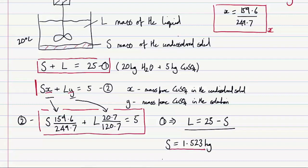The key takeaways from this problem are: we set up the problem using a diagram and interpreted the information in the question; we labeled our unknowns; we wrote the appropriate number of equations to solve for those unknowns; and we introduced the idea of a mass fraction, using that definition and the data given in the question to set up two simple equations which we could then solve.